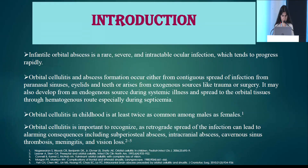Infantile orbital abscess is a rare, severe, and intractable ocular infection which tends to progress rapidly. It can occur either from contiguous spread of the infection from paranasal sinus, eyelid, or teeth, or it can arise from exogenous sources like trauma or surgery. It can also develop from endogenous sources during systemic illness and spread to the orbital tissue through hematogenous routes, especially during septicemia.